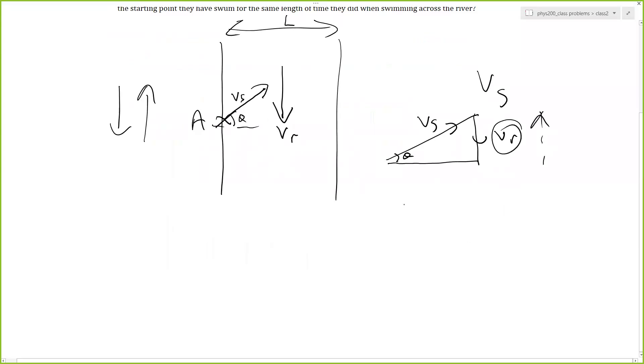So we need the component of Vs going in this direction to cancel out Vr. In fact, it's easier just to wipe that out. This is Vs sine theta. So we know that Vs sine theta is equal to Vr, which tells us that theta is equal to the sine inverse of Vr divided by Vs.